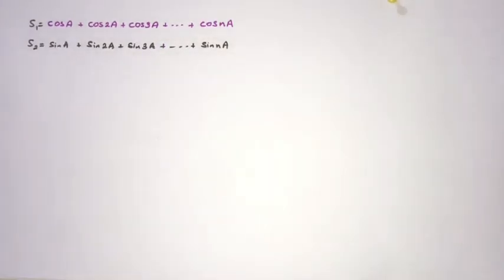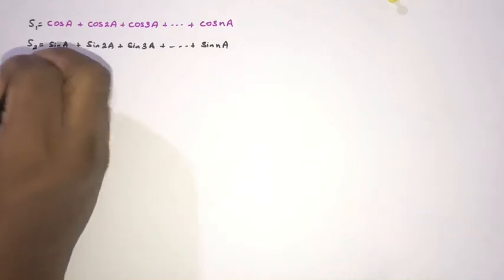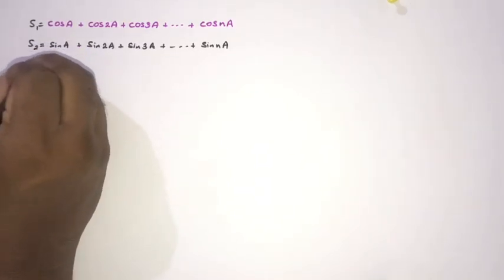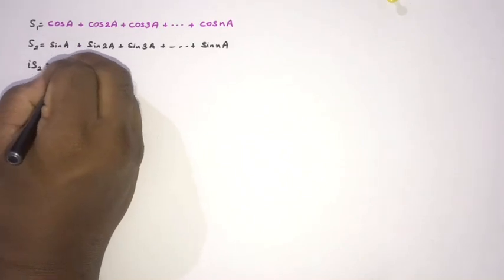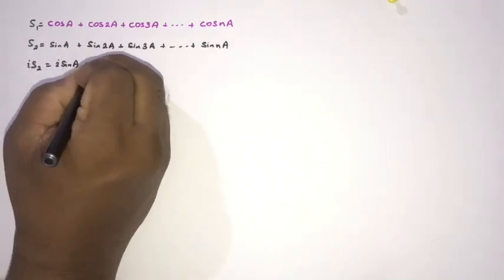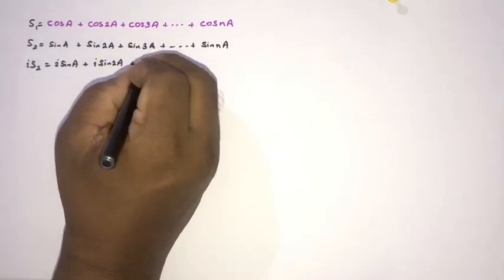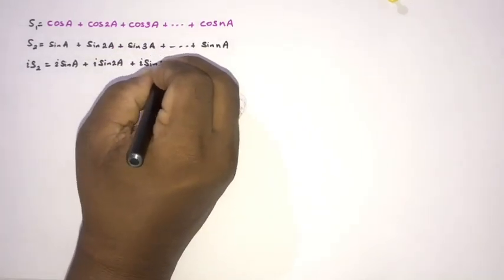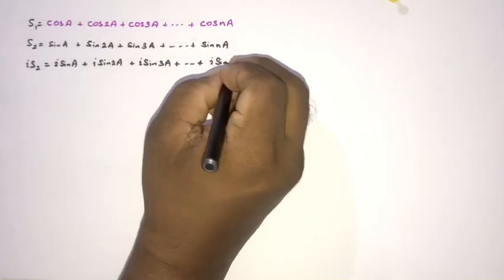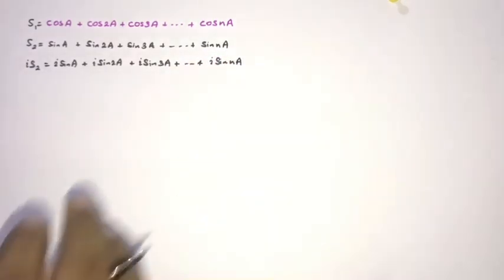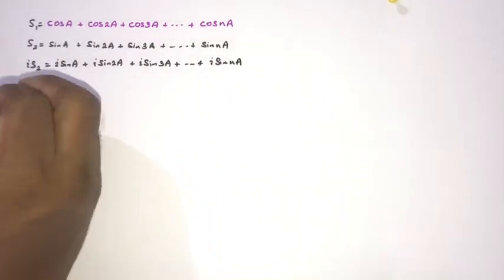Then I am going to multiply S2 by i, the complex unit. So here i·S2 is equal to i·sin(a) + i·sin(3a) + ... + i·sin(na). Then we can take the sum of S1 + i·S2.